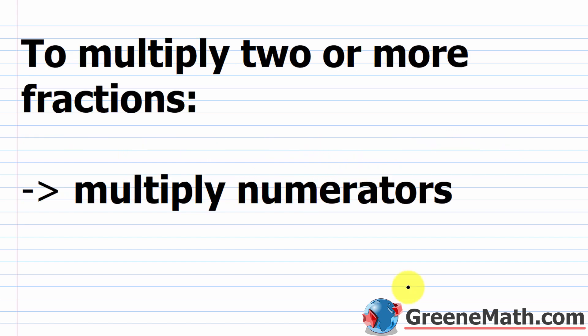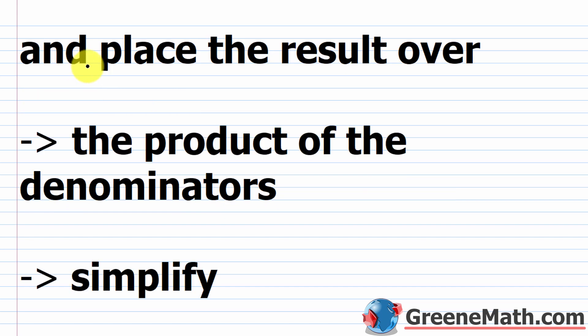I'm going to give you an initial procedure, and then modify it slightly. We're going to start doing something called cross-canceling, which will allow us to simplify while doing the multiplication problem so we don't have to simplify after. Let me give it to you the basic way first, and then we'll do the modification.